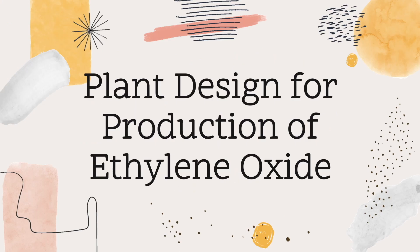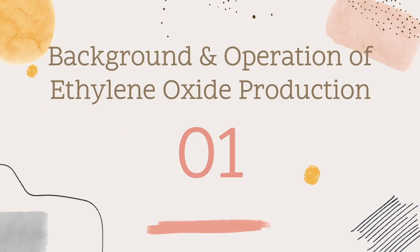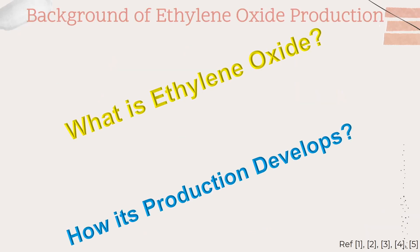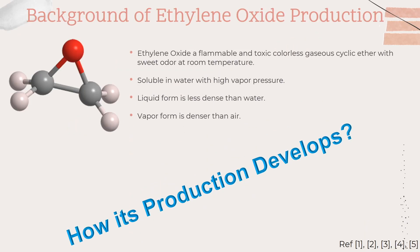Plant Design for Production of Ethylene Oxide: Background and Operation. Ethylene Oxide is a flammable and toxic colorless gas. Its chemical structure is a cyclic ether with a sweet odor at room temperature. It is soluble in water with high vapor pressure, and in liquid form it is less dense than water, but when in vapor form it is denser than air.